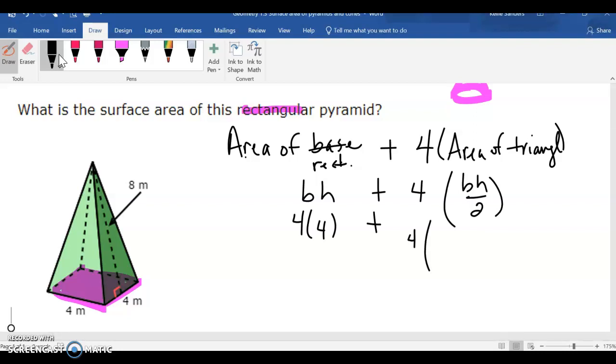And then we have 4, and the base of the triangle is 4. The height is 8 divided by 2, and we're going to multiply that by 4 because we have 4 triangles that make the shape. So, 4 times 4 is 16.